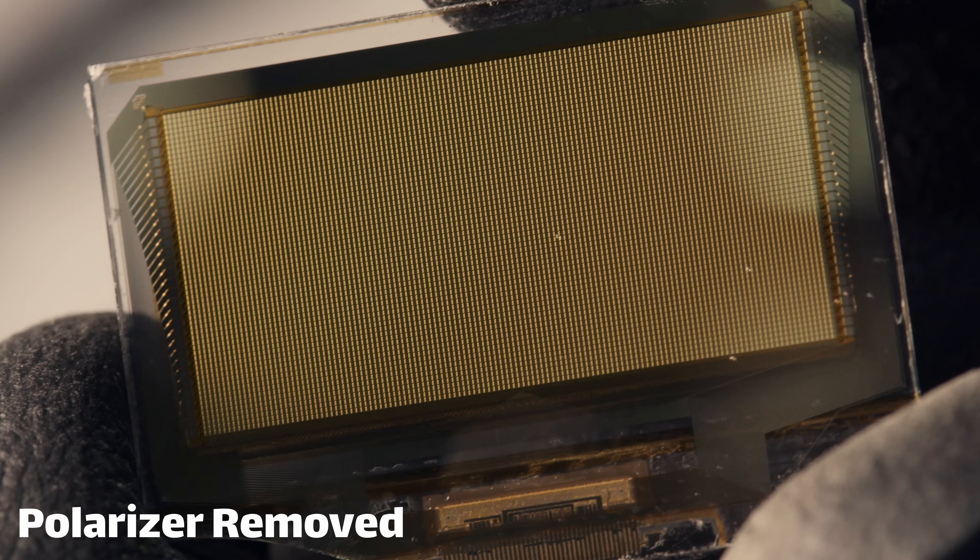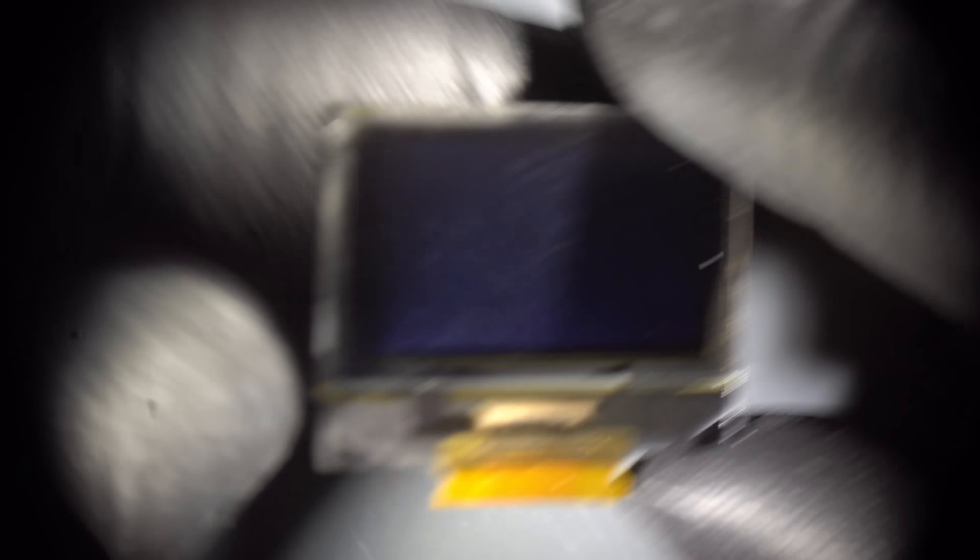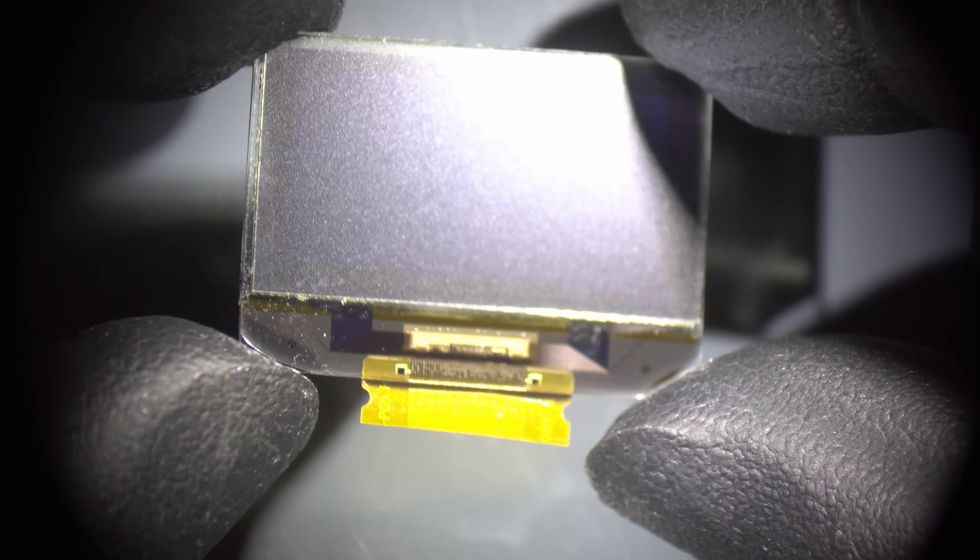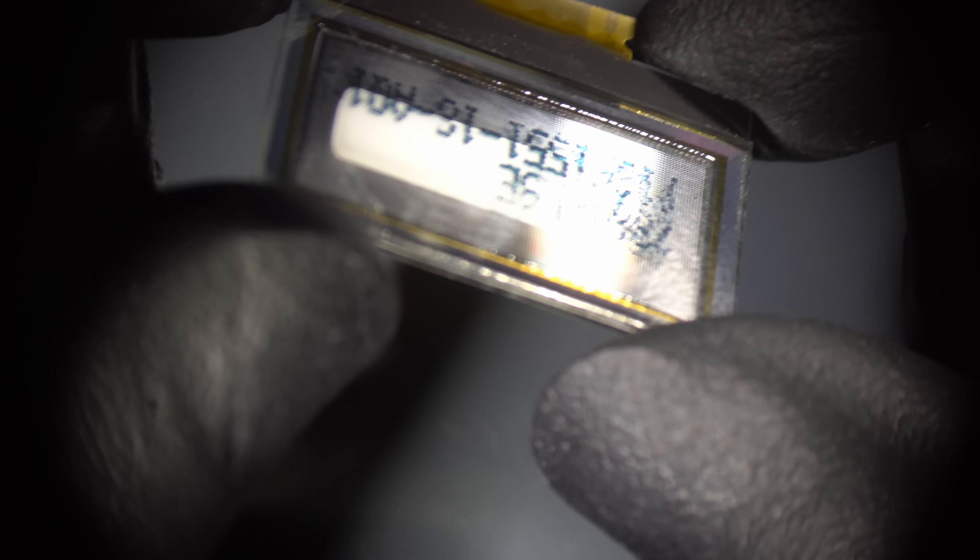That LCD is basically a piece of fancy glass with a lot of electronics printed on the surface, and it's attached to the rest of the device with a flexible cable. But making the electrical connection between the cable and the glass is surprisingly tricky because you can't just solder things to glass very easily.